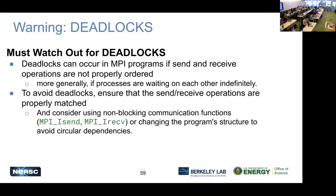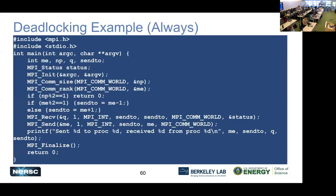Deadlock is the number one problem for beginning MPI programmers. It can occur when sends and receives don't match or aren't properly ordered, or when processes are waiting on each other. Here's an example code that always deadlocks — its purpose is to demonstrate deadlock. It's not useful in real life, but it illustrates the problem.